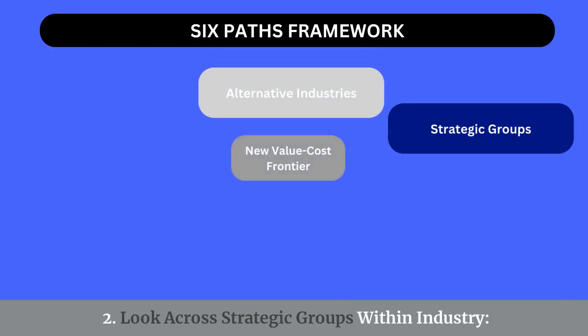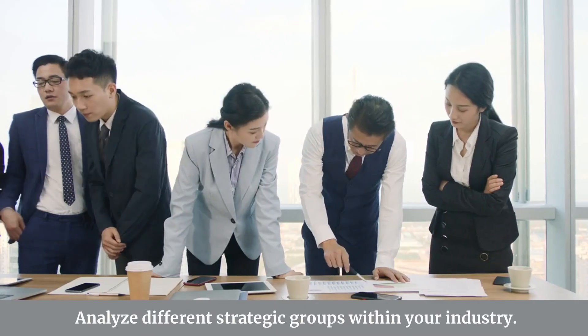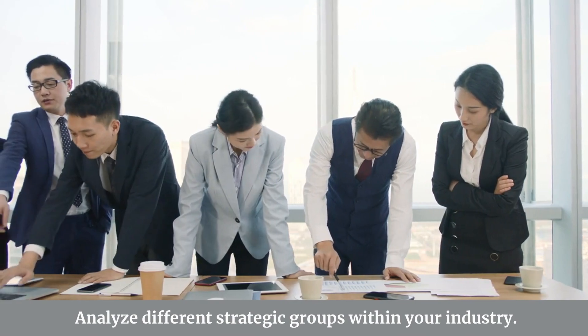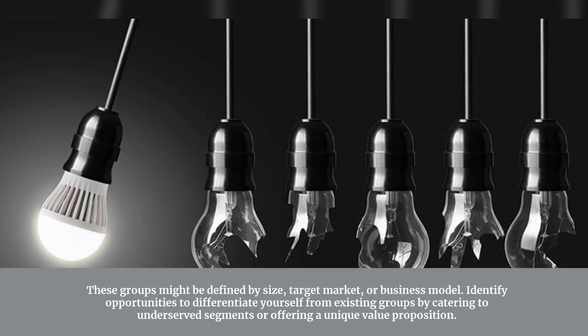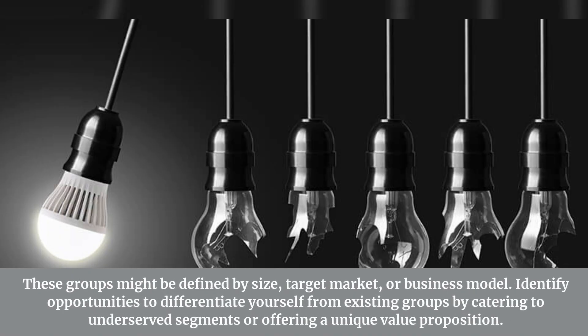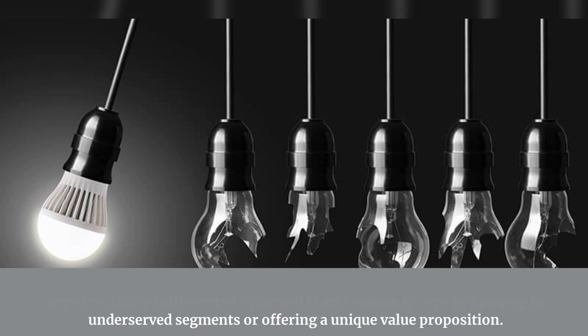Path 2: Look across strategic groups within the industry. Analyze different strategic groups within your industry. These groups might be defined by size, target market, or business model. Identify opportunities to differentiate yourself from existing groups by catering to underserved segments or offering a unique value proposition.